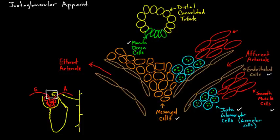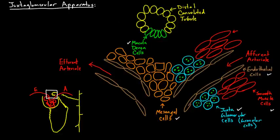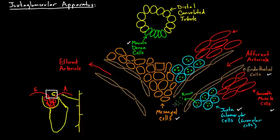The key is remembering that the goal of the juxtaglomerular apparatus is to release renin. Think about where renin is - those little granules are each loaded with renin. When these granules dump themselves into the blood vessel, this is your renin. That renin makes its way into the afferent arteriole, then goes through the glomerulus, and on the other side sprinkles out through the efferent arteriole. That's how renin gets released.